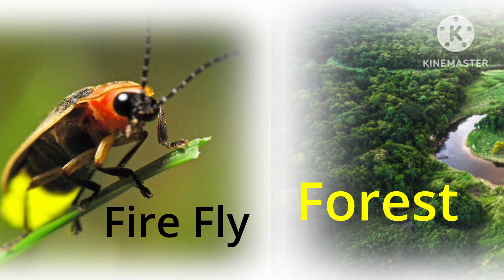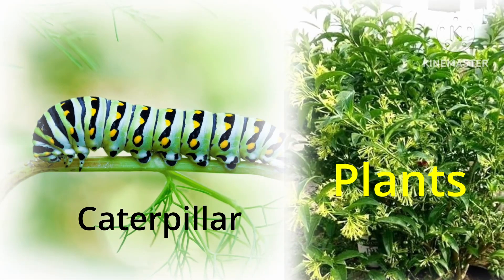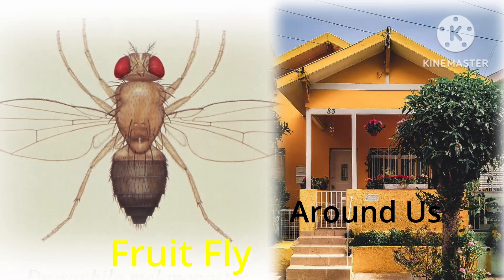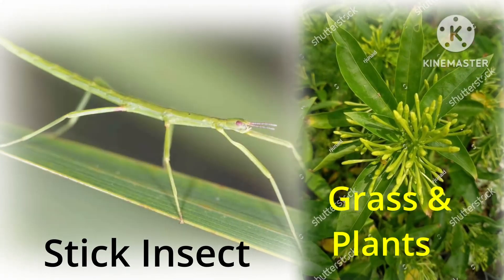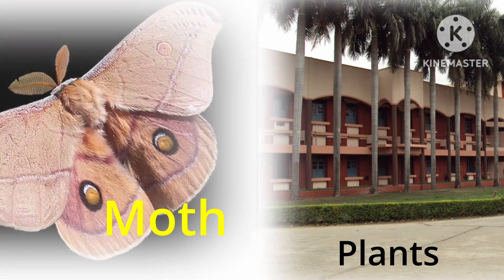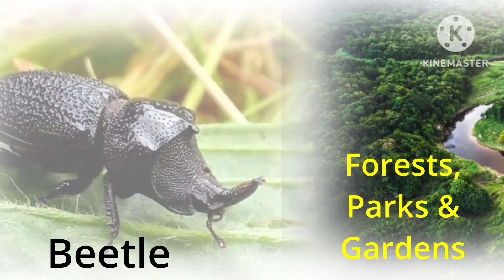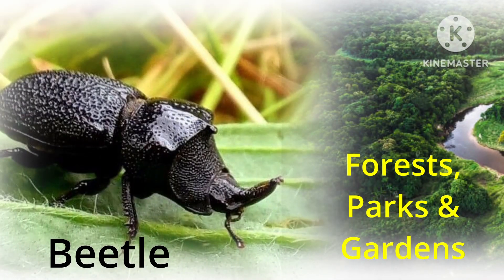Firefly lives in forests. Caterpillar lives on plants. Fruitfly lives around us. Stick insects live in grass and plants. Moth lives on plants. Beetle lives in forests, parks and gardens.